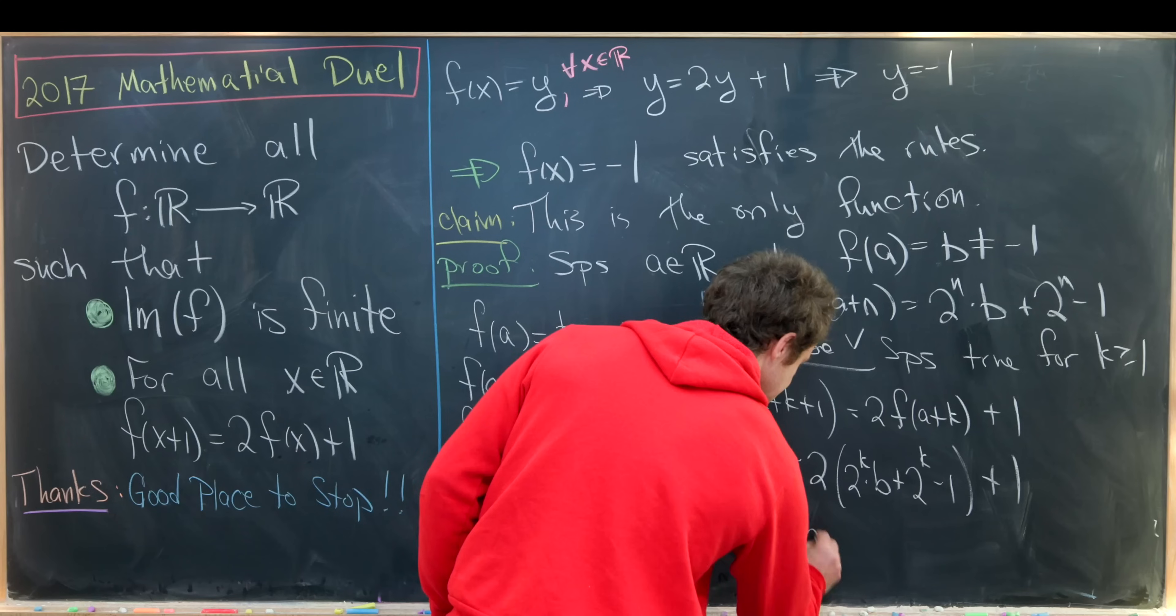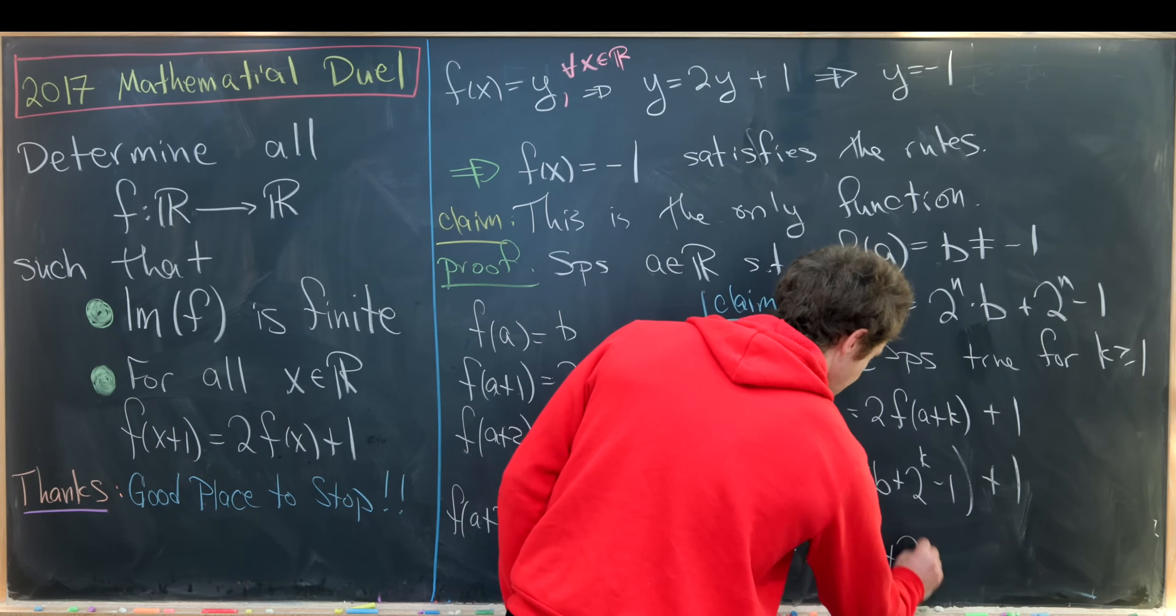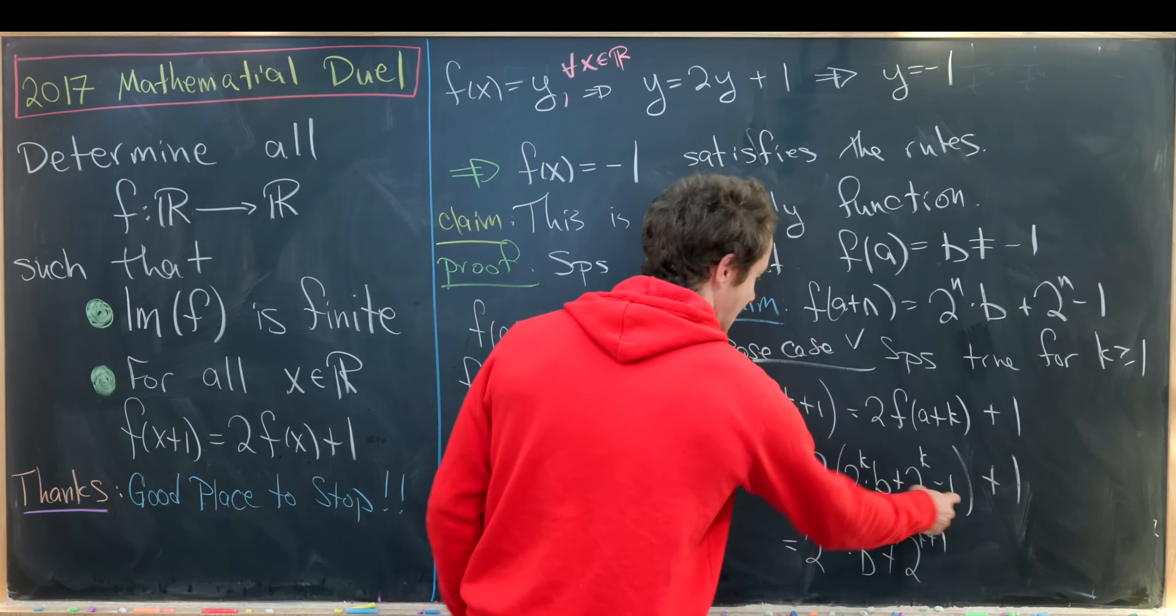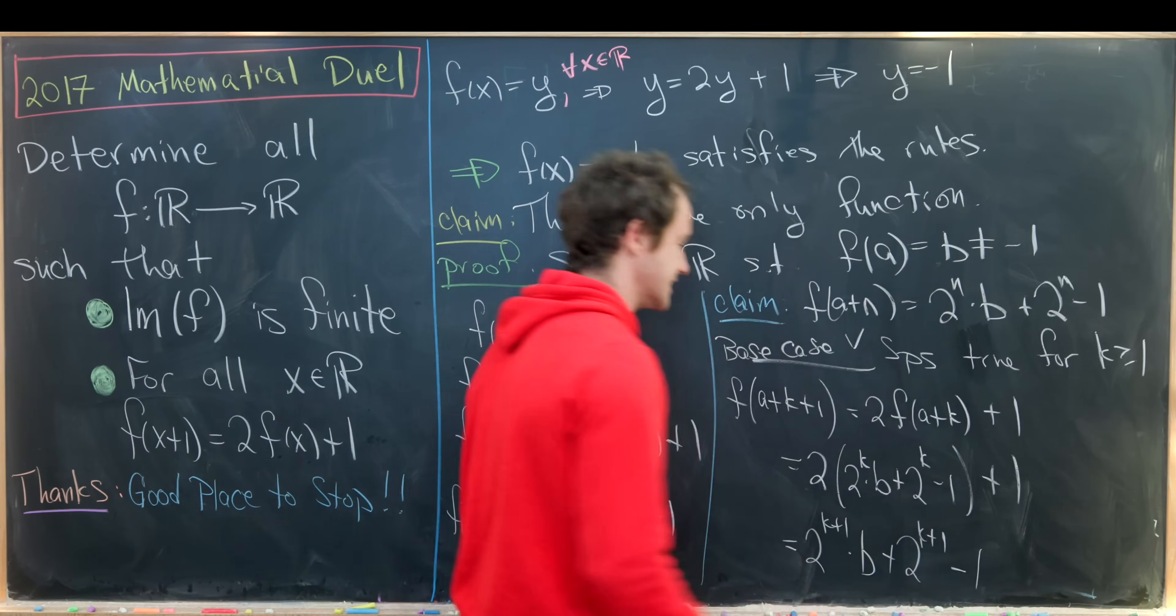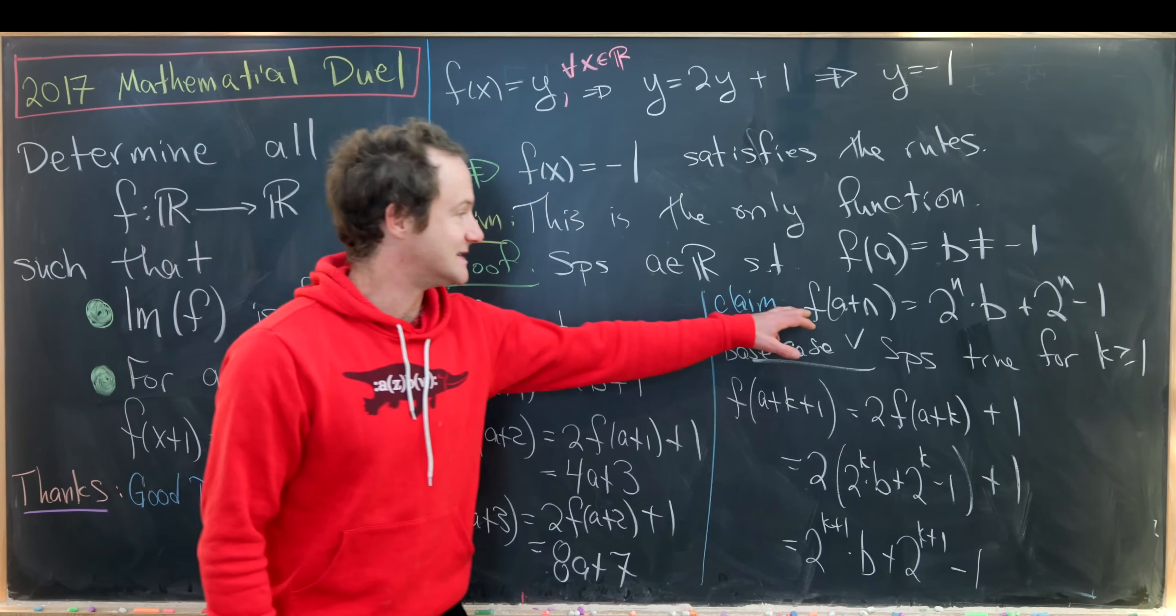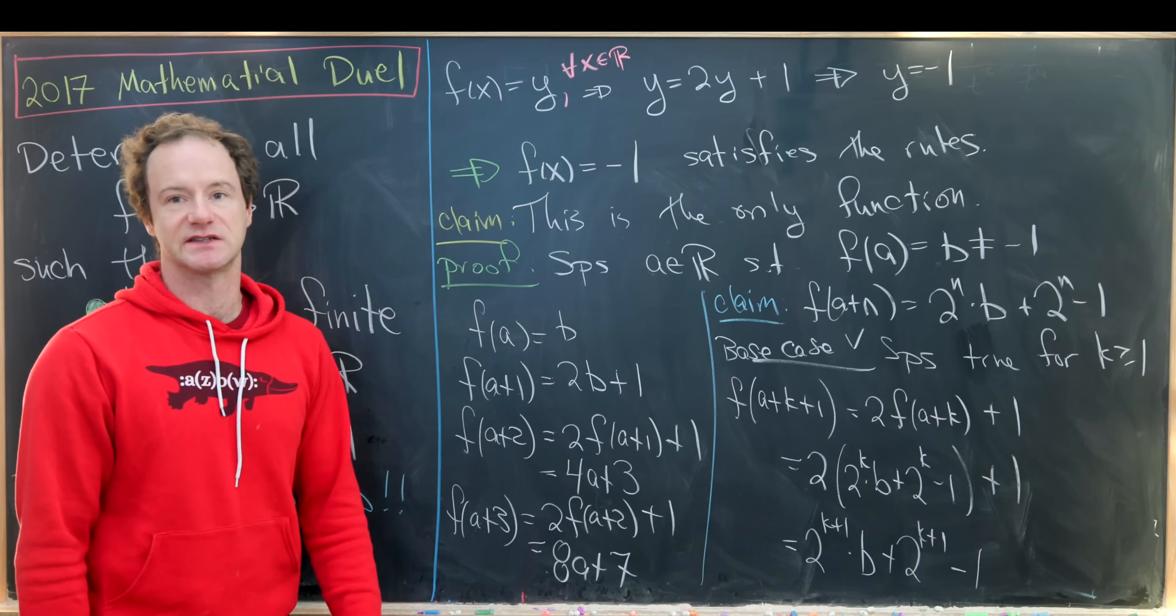be exactly what we want. This is clearly equal to 2^(k+1) times b plus 2^(k+1) minus 2 plus 1, so that'll be minus 1. So indeed this function satisfies this rule.